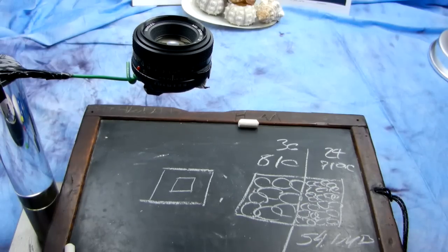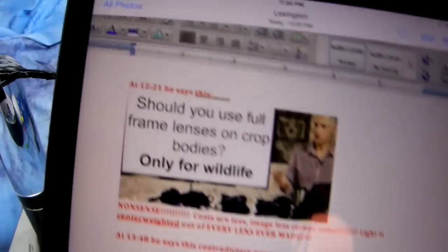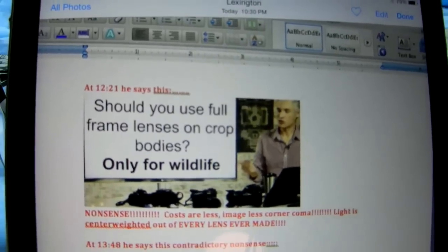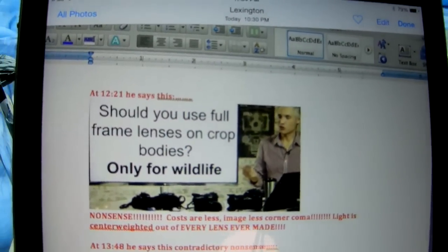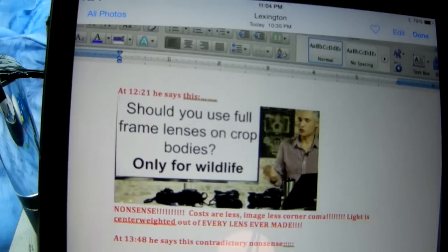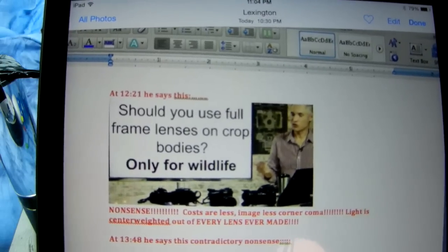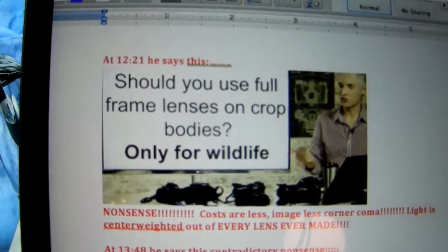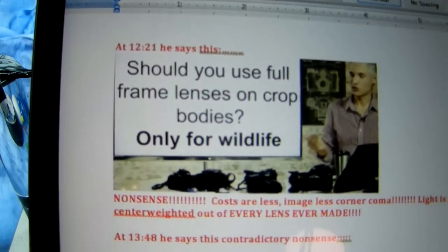DXOMark is a bogus website. Now, at 12 minutes and 21 seconds, there's actually, I've got to list like 13 mistakes he makes in here that are just heinous. There's a total of like 20 or so. But, you know, you make six videos listing all the mistakes in this one video. At 12:21 he says this, should you use a full frame lens on a cropped body? He says, only for wildlife. Oh, well that's interesting.